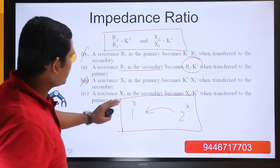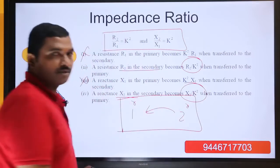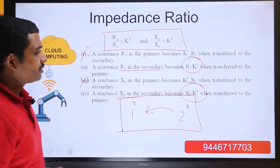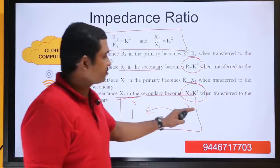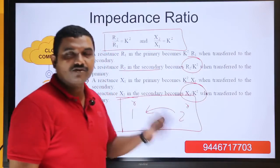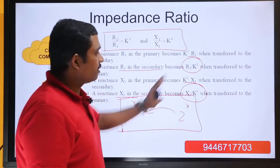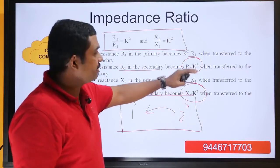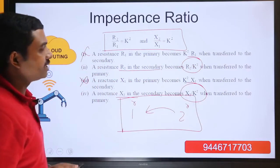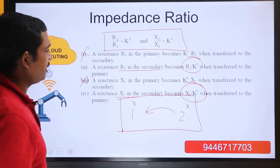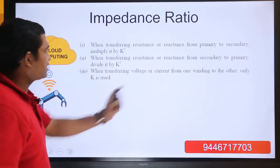A reactance X2 in the secondary becomes X2 by K squared when transferred to the primary. So when it is R2 by K squared and X2 by K squared going secondary to primary, the other direction gives K squared R and K squared X. We are only going to study R2 by K squared and X2 by K squared.